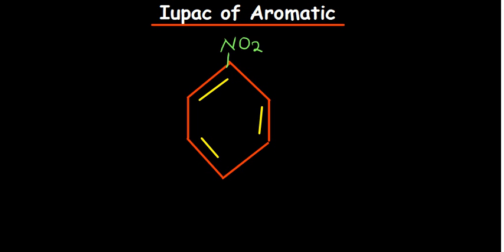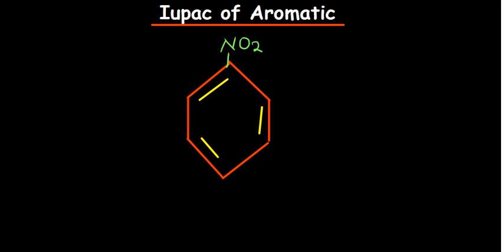Let's begin with a simple example: where we have nitrogen dioxide attached, nitrogen dioxide is called nitro, so it will be nitrobenzene. Another example is methyl being attached, which was called toluene — in that case it is methylbenzene. Very simple.